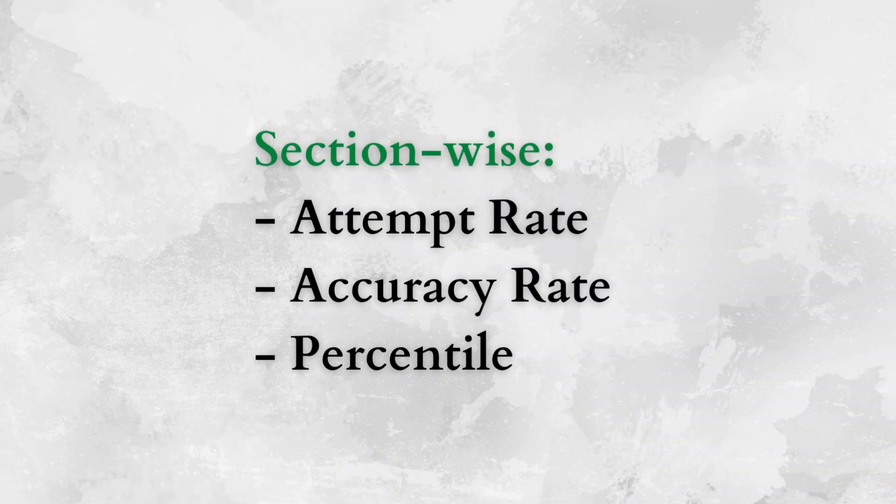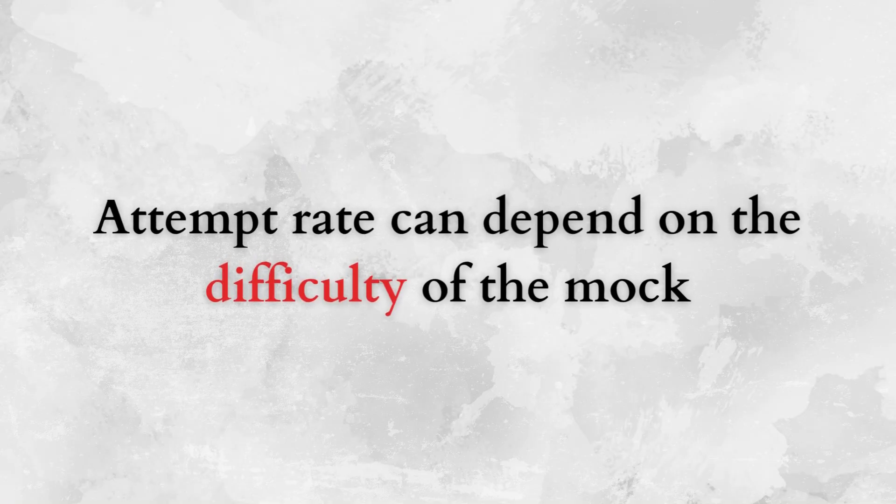Once you take a mock, take note of three parameters: write down the section-wise attempt rate, the section-wise accuracy rate, and the section-wise percentile. Make sure you don't worry too much about the attempt rate because it also depends on the difficulty level of that mock. If the mock is of a higher difficulty level, you can get a slightly lower attempt rate. But you have to note the attempt and accuracy rate of each mock and try to improve them going forward.